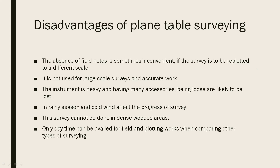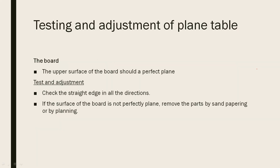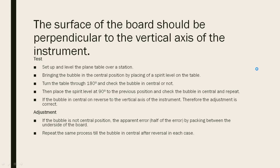Regarding the adjustments of the plane table board: the board should have a perfect flat surface. We can paint the edges across the edge. We can smooth the surface — it should be a straight line. You can remove irregularities from the surface by sandpapering or planning. The surface of the board should be perpendicular to the vertical axis of the instrument, and there should be no bubble deviation at the center of the board.